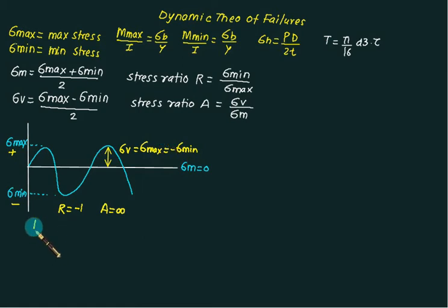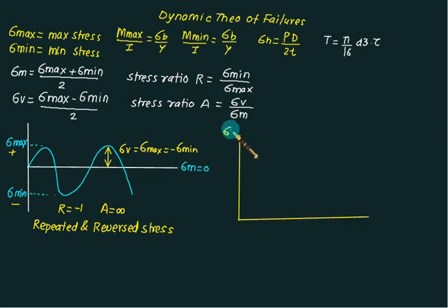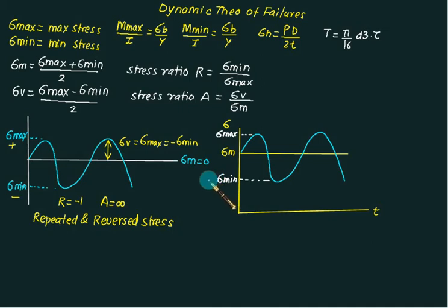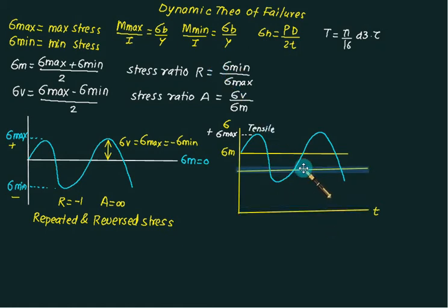This type of stress is called repeated and reversed stress. If we change the value of sigma_mean, we get different conditions. Plotting stress on the Y axis and time on the X axis — if the mean value is positive and we have a fluctuating stress variation — then both sigma_max and sigma_min are positive values. In this case, the stress ratio R is between 0 and 1, and the nature of both stresses is tension.